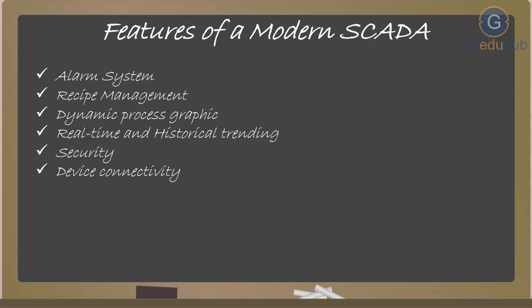The next feature is device connectivity. Every control hardware has its own communication protocol for communicating with different hardware or software. Some leading communication protocols include Ethernet and DH485. SCADA software needs device driver software for communication with a PLC or other control hardware. The more driver software available, the better the device connectivity. Most SCADA software used in industry have connectivity with most leading control systems.